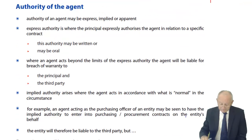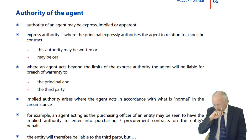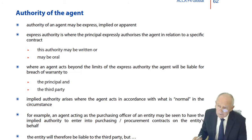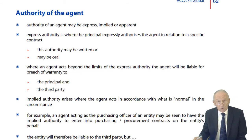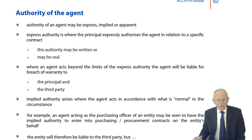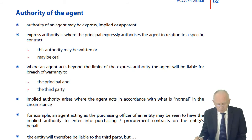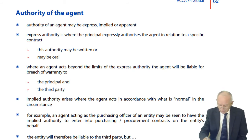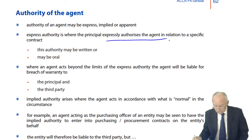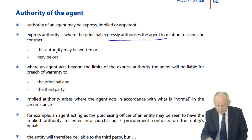Moving on now to authority. The authority of an agent may be expressed, implied, or apparent. Express authority is very straightforward — it's where you say you have the authority to act on my behalf and sell Cadbury sweets to sweet shops all over the country. Express authority is where the principal expressly authorises the agent in relation to a specific contract, and it may be written or oral.